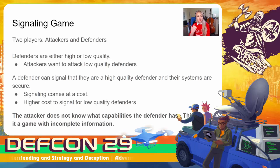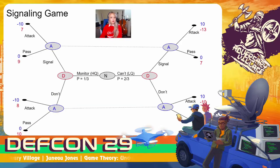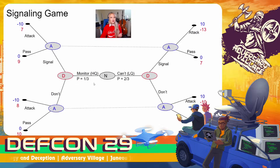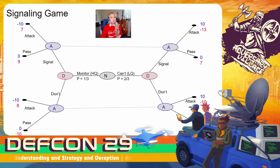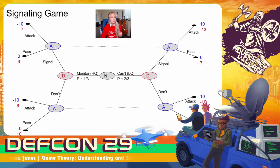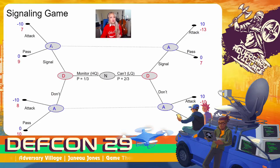One thing to keep in mind is the attacker does not know what capabilities the defender it comes across has. This makes this a game with incomplete information. Here I have another decision tree for our signaling game. The first move is just a move by nature determining whether any given defender is high or low quality. We're going to say high quality defenders appear at a percentage of one third, or 33% of the time, and low quality defenders who can't monitor their stuff appear at a percentage of 66% of the time. Next is the choice by the individual defender to signal that they're a high quality defender or not — and of course that signal comes at a cost. And finally, the choice by the attacker to attack or pass. The dotted line between the attacker nodes signals that the attacker does not know which part of the tree it's on — the attacker knows only that they've seen a signal, not whether the defender is high or low quality.